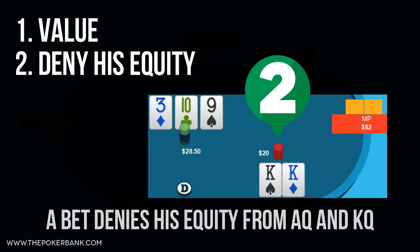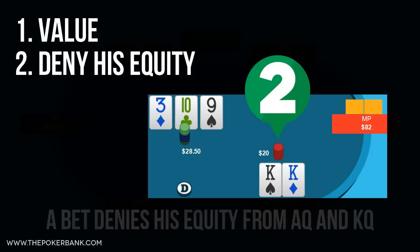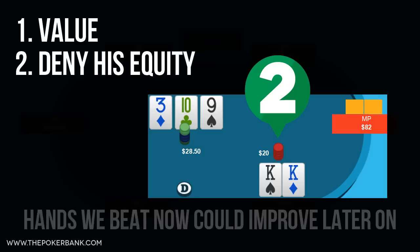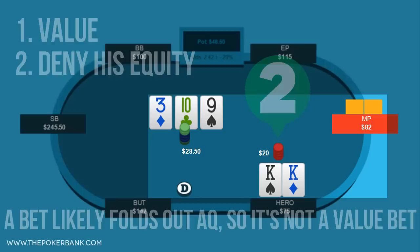Second, this also folds out his equity from hands like King-Queen and Ace-Queen. These hands have varying levels of equity against our hand, and while we're beating these hands right now, there's a chance they improve and beat us on future streets. Our bet here isn't for value against these hands since they will likely fold, but if they will fold then we are denying them their equity share in the pot.